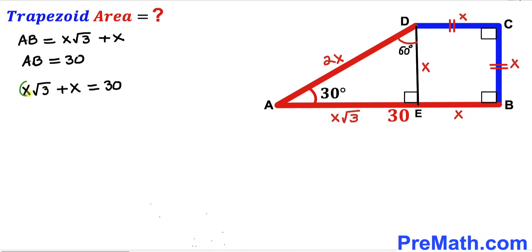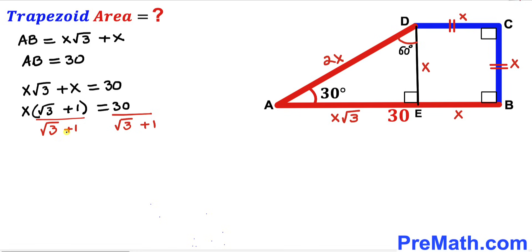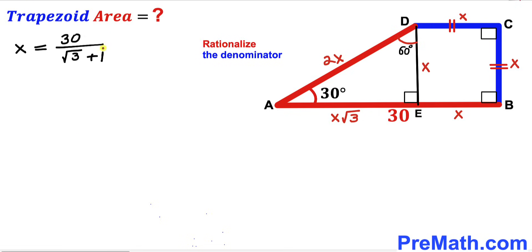Since x is common, we can factor: x(√3 + 1) = 30. Now dividing both sides by (√3 + 1) to isolate x, we get x = 30 / (√3 + 1).